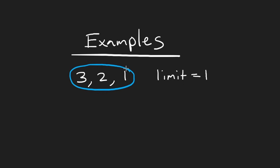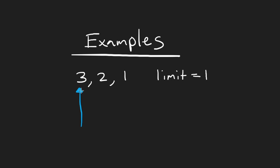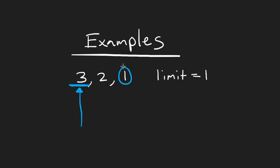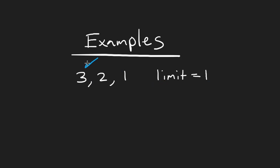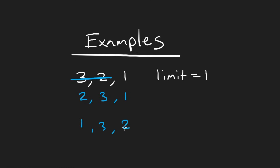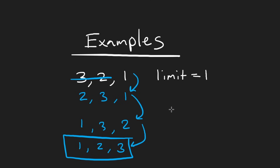So I pick one, and I check: can one be swapped with three? The difference is bigger than the limit, so it cannot be directly swapped. But isn't it still possible that one could end up there? Because maybe we put two there first, getting 2, 3, 1. Then we move one over to get 1, 3, 2. And then we swap the last two to get 1, 2, 3. So it's definitely possible to fully sort this — it just takes multiple swaps.